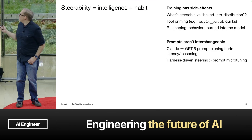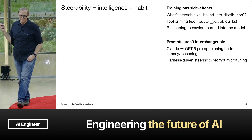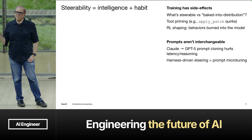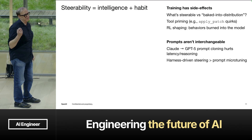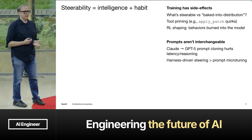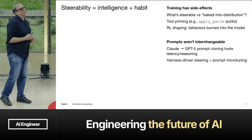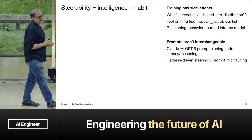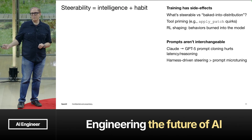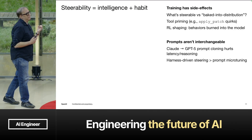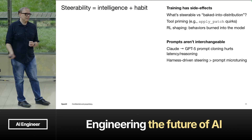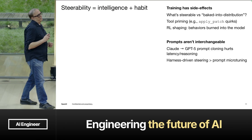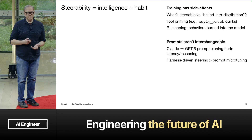Fitting a model into a harness takes a lot of prompting. It turns out that how the model is trained has side effects. I like to think about it this way: intelligence plus habit. Intelligence — what is the model good at? What languages does it know really well? What are its capabilities in terms of how well it can write code in certain frameworks? And then what habits did it learn to use to solve those problems? We've trained our models to have habits like planning a solution, looking around, gathering context, and thinking about a problem before diving in and writing code, and then testing its work at the end.